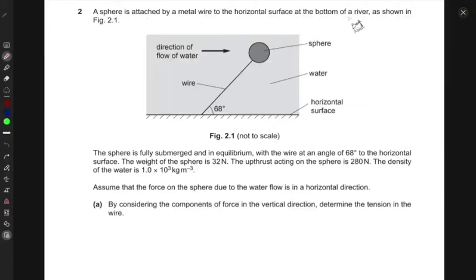A sphere is attached by a metal wire to the horizontal surface at the bottom of a river as shown in this figure. This is the flow of water. Here we have a sphere and it's attached by a wire in the water.